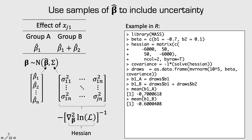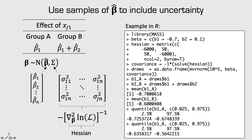We can compute statistics off these vectors. The mean of beta 1A is about negative 0.7, and the mean for beta 1B is negative 0.6 — both matching our point estimates. Using the quantile function for a 95% confidence interval (quantiles 0.025 to 0.975), we get negative 0.73 to negative 0.67 for group A, and negative 0.64 to negative 0.56 for group B. Since the upper value for group A (negative 0.67) is still lower than the lower value for group B (negative 0.64), the confidence intervals don't overlap, indicating a statistically significant difference between the groups.